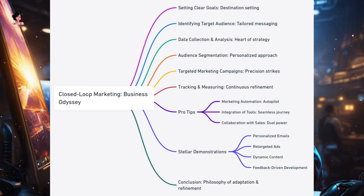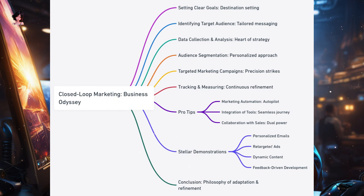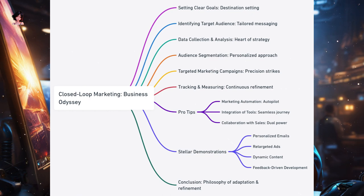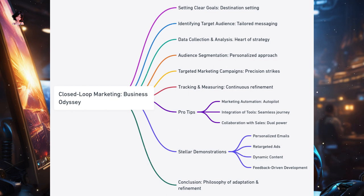Closed-loop marketing — navigating the business odyssey. In the vast sea of business strategies, closed-loop marketing emerges as a beacon, guiding companies towards their desired destinations. Much like a seasoned captain uses a compass and map to navigate the waters, businesses employ closed-loop marketing to steer their efforts based on real-time feedback and data. Key takeaways: setting clear goals — clear objectives, whether increasing leads, sales, or customer satisfaction, set the course. Identifying the target audience — tailoring marketing efforts to a specific audience ensures the message resonates and has the desired impact. Data collection and analysis — the heart of closed-loop marketing lies in gathering data and deriving insights.